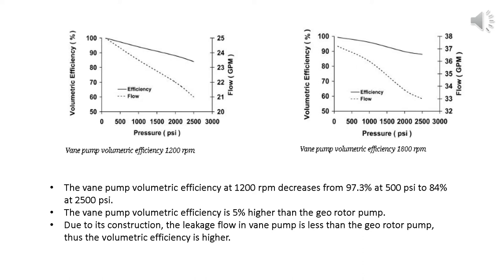According to my analysis, the vane pump volumetric efficiency at 1200 RPM decreases from 97.3% at 500 PSI to 84% at 2500 PSI. The vane pump volumetric efficiency is 5% higher than the georotor pump. Due to its construction, the leakage flow in vane pump is less than the georotor pump, thus the volumetric efficiency is higher.